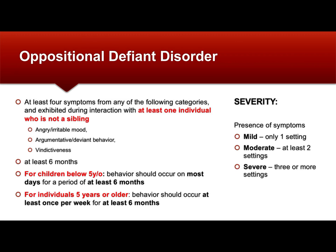Looking at the specific diagnostic criteria, the person should exhibit at least four symptoms from any of the following categories. There are three categories, and the behaviors must be exhibited with an individual who is not a sibling. This is important because arguing with siblings is pretty common and is generally not out of spite toward an authority figure — it's just a normal sibling dynamic. So the sibling doesn't count.